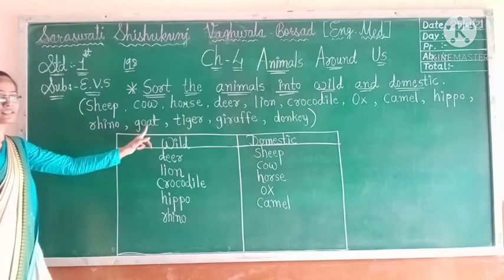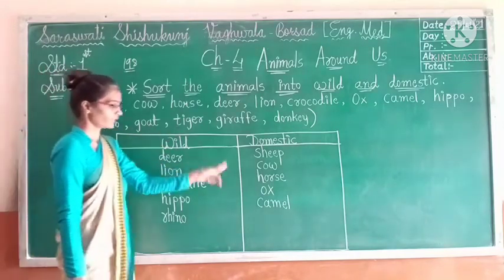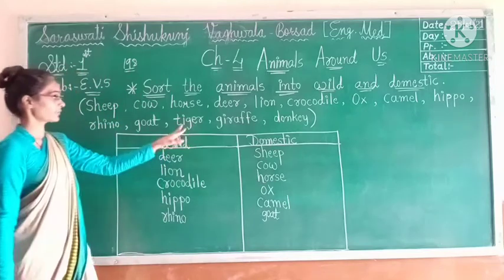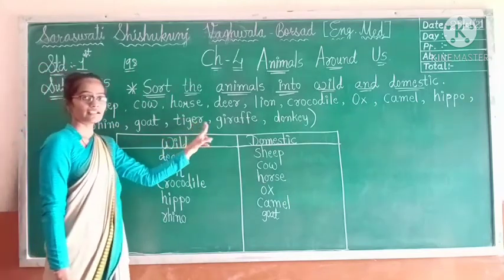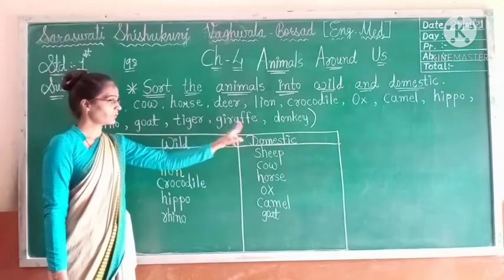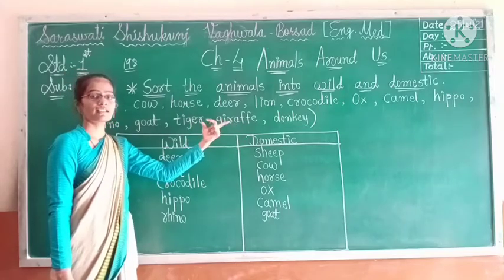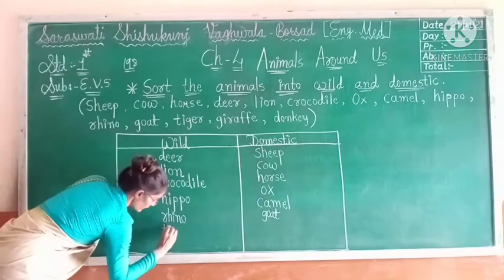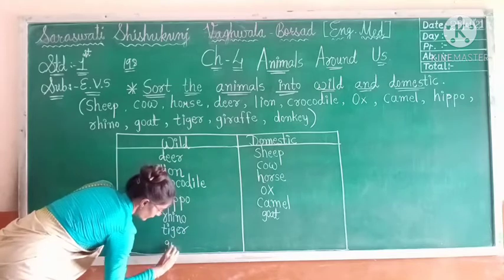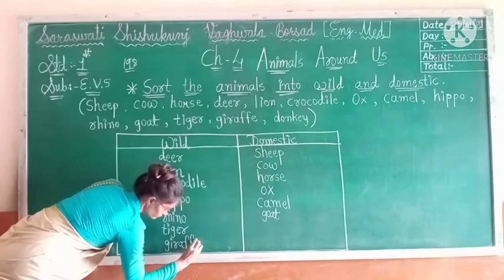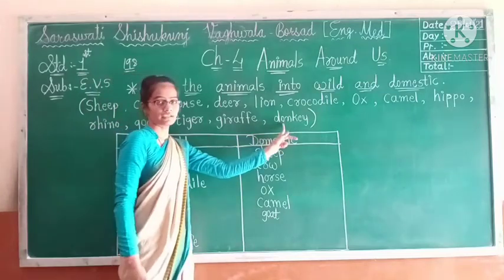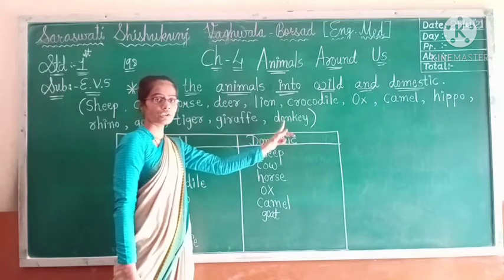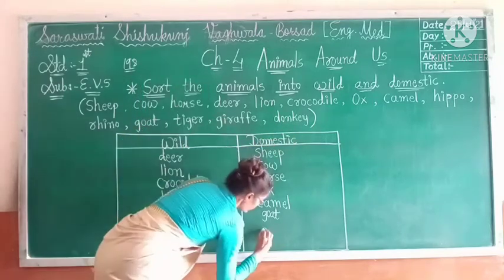Then after goat — goat is a domestic animal, so we will write it here. Then after that is tiger, and then giraffe. Tiger and giraffe are both wild animals, so we will write tiger and giraffe under wild. Last one is donkey — we find it in our surroundings, that is why it is called a domestic animal, so we will write donkey here.